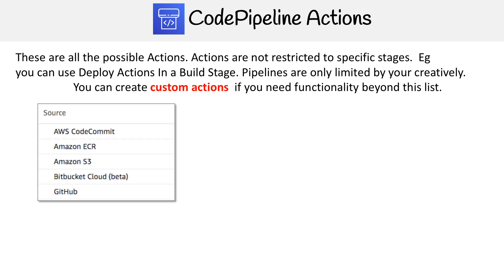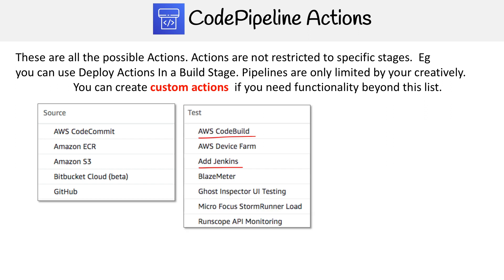The first action type is source, where we're pulling code from some repository. We have CodeCommit, ECR, S3, and they now have support for Bitbucket — which is long overdue — and GitHub.